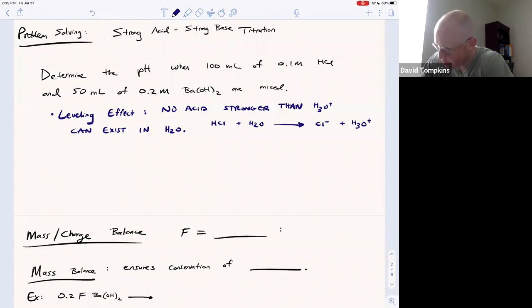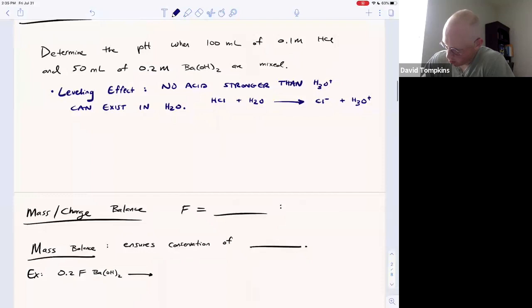Because of its large Ka value, it will give one hydronium for every one HCl. This also applies to strong bases. So no base stronger than hydroxide can exist in aqueous solvent.